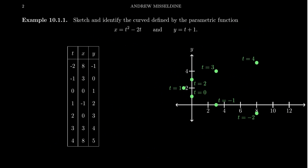Let's consider an example of a parametric function. Let's sketch and identify the curve defined by the parametric equations: x equals t squared minus 2t, and y equals t plus 1. We can graph this like any other graph — when we first learn to graph functions it comes down to connect the dots. We pick parameter values, find corresponding x and y coordinates, get enough dots, and connect them.